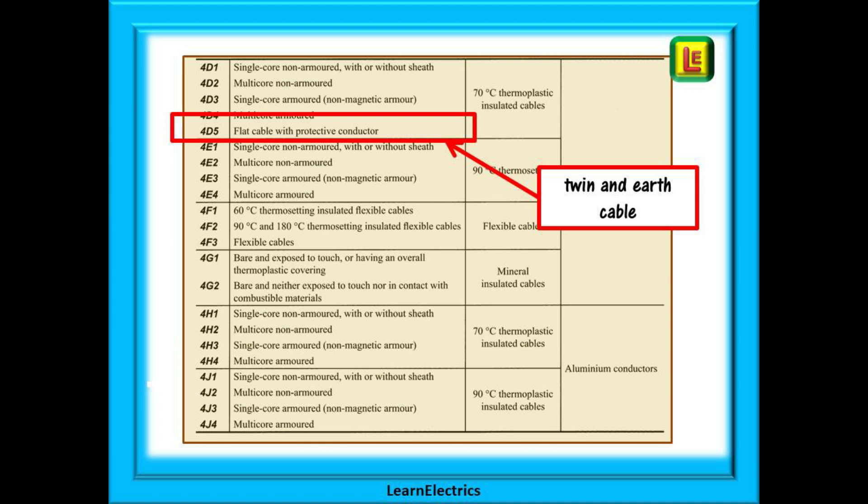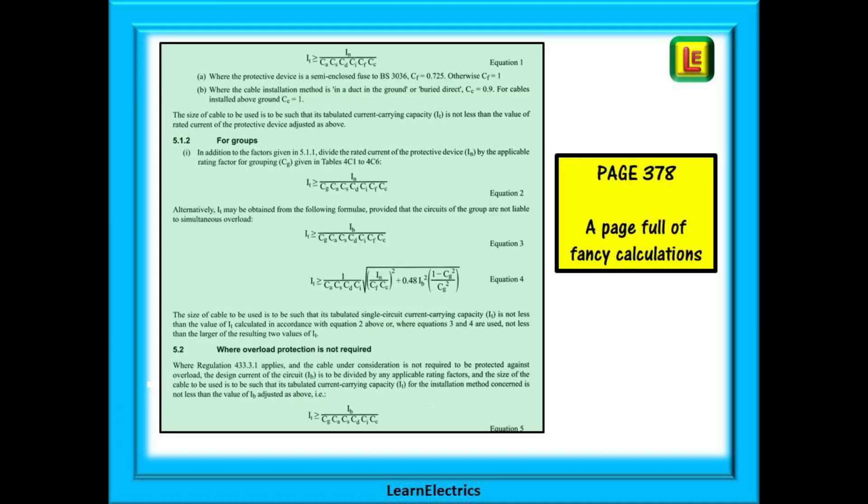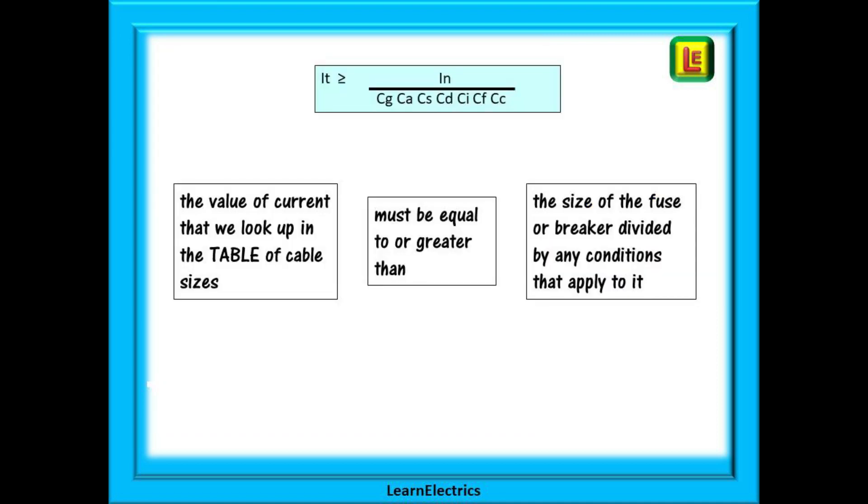On page 378 we will find a whole page of fancy calculations for working out cable sizes for all these different conditions and rating factors. Don't worry we are going to make it very easy. If we take the first equation it looks like this. What does each part actually mean? The first symbol IT is the tabulated current. I for current, T for tabulated.